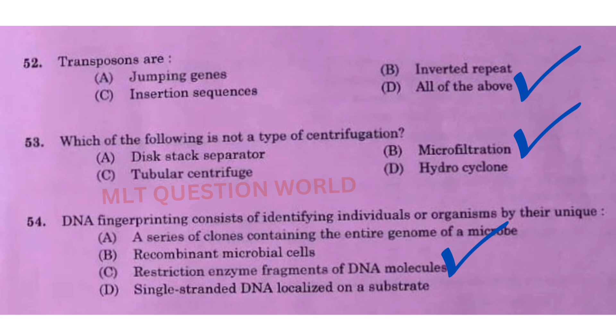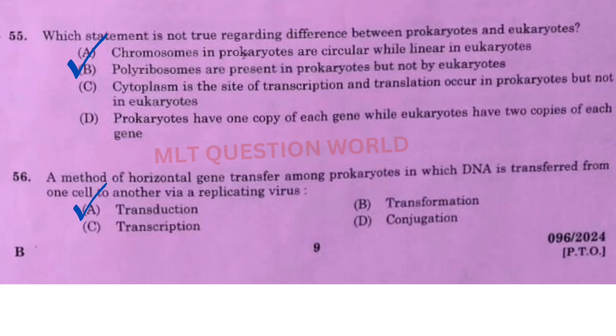Next one: DNA fingerprinting consists of identifying individuals or organisms by their unique restriction enzyme fragments of DNA molecules — the right answer is option C. Next one: Which statement is not true regarding the difference between prokaryotes and eukaryotes? The right answer is option B — polyribosomes are present in prokaryotes but not in eukaryotes.